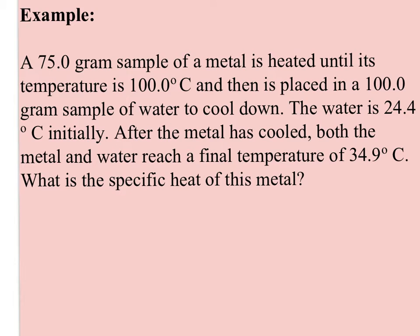Let's look at an example of a metal. A 75 gram sample of a metal is heated until its temperature is 100°C and is placed in a 100 gram sample of water to cool down. The water is 24.4°C initially. After the metal has cooled, both the metal and water reach a final temperature of 34.9°C. What is the specific heat of this metal? That's a lot of information to keep track of.